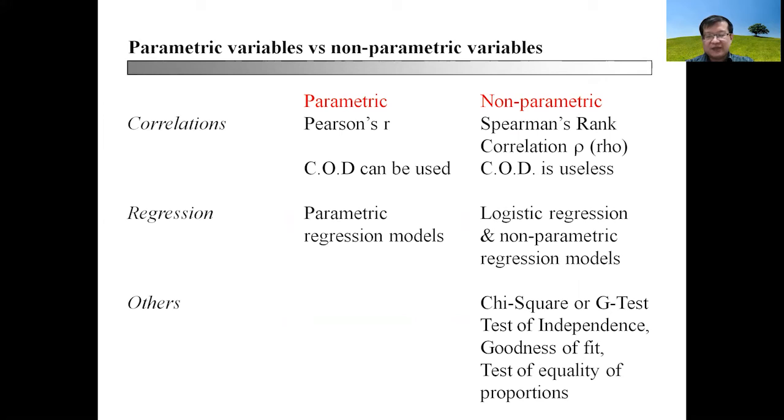Whereas in non-parametric methods, you shall be focusing on Spearman's rank rho. COD stands for coefficient of determination, so correlations when analyzed as parametric data will be dependent on coefficient of determinants, whereas COD is totally useless if we are analyzing using ranks under non-parametric conditions.